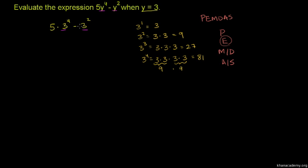So 3 to the 4th is 81, and 3 squared is also there. So we have 5 times 3 to the 4th, which becomes 5 times 81, minus 3 squared.